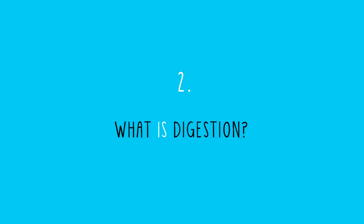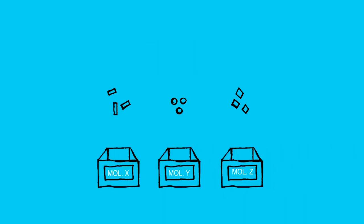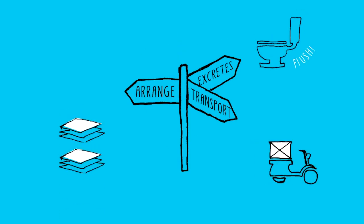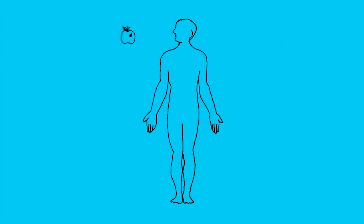Let's go over what digestion even is. It refers to our body separating molecules and breaking them up into more complex substances through chemical and mechanical means. It also sorts and divides molecules by type and then sends them to be used or stored in our body, and it arranges, transports, and excretes whatever the body needs or doesn't need. In other words, we just chew and swallow, the food gets pulled apart, and nutrients get transferred to where they need to go without us even realizing what's going on.